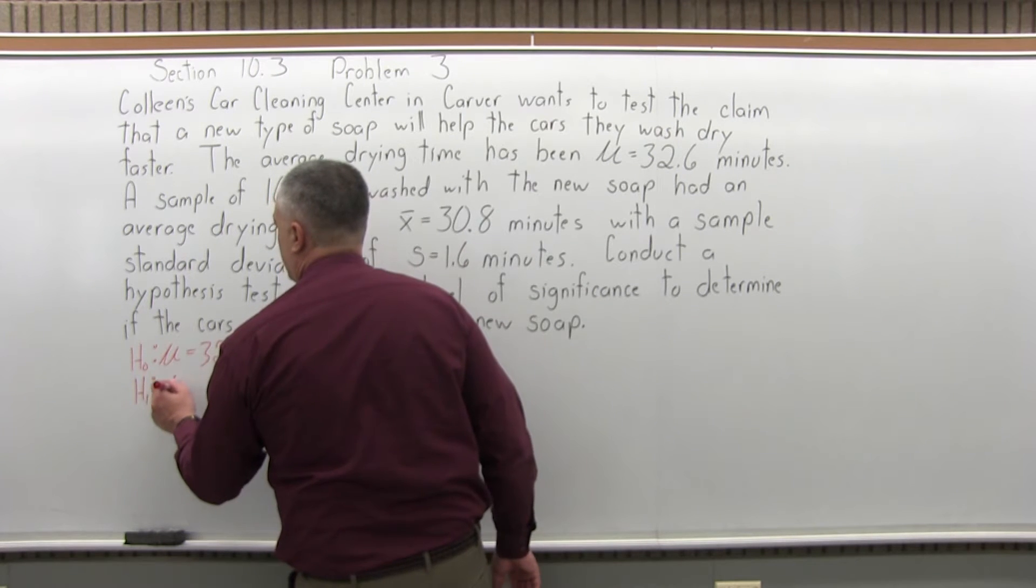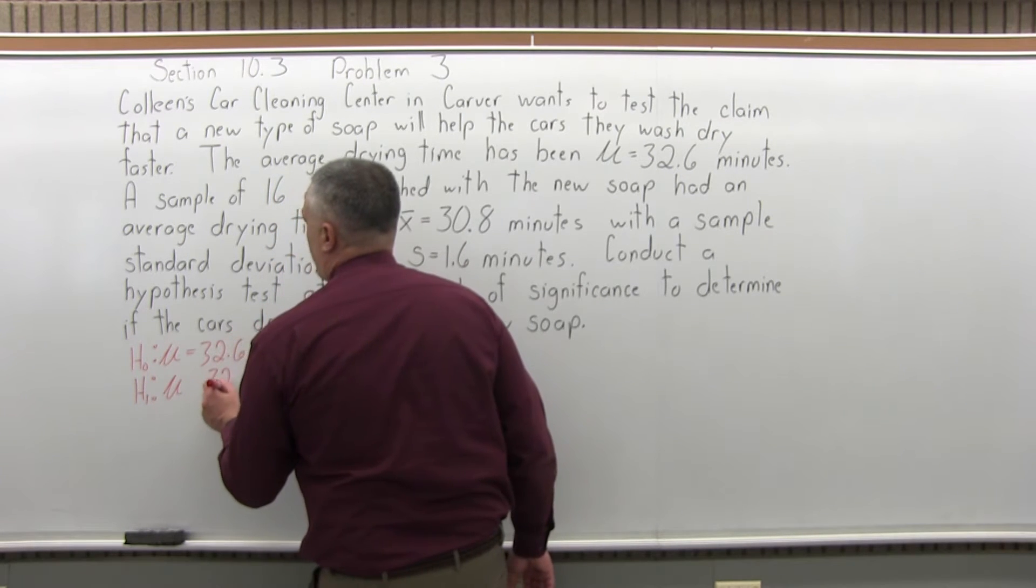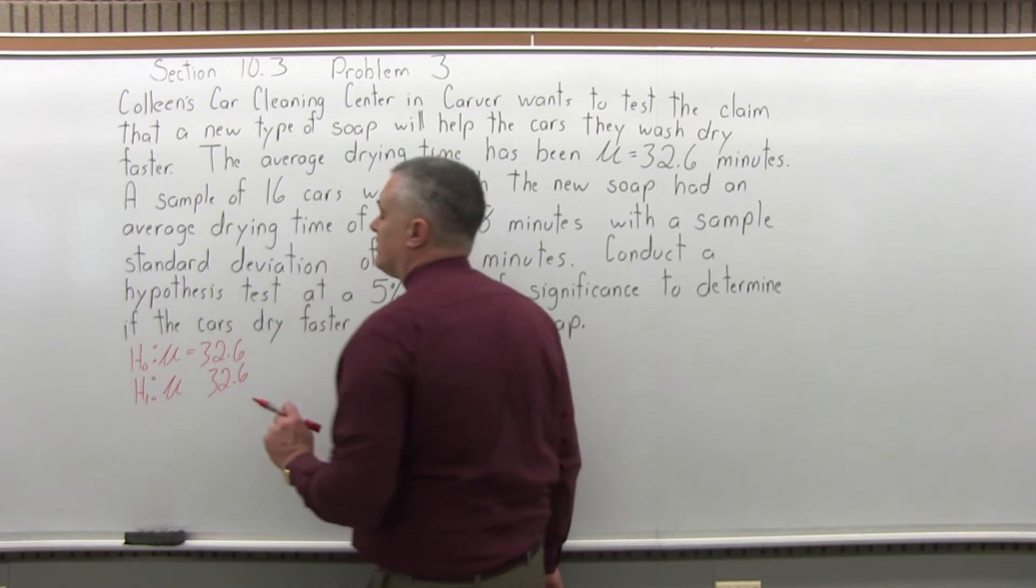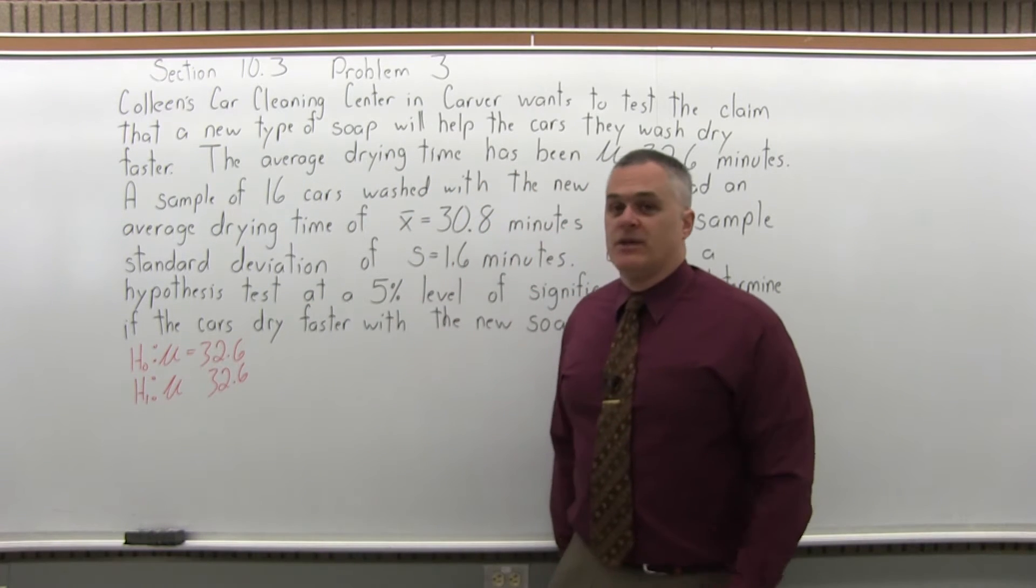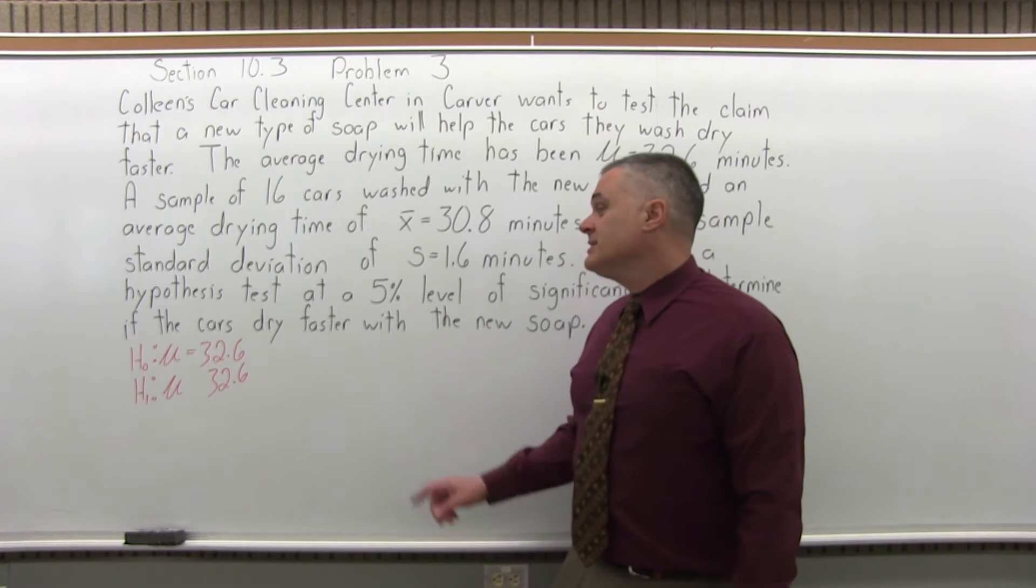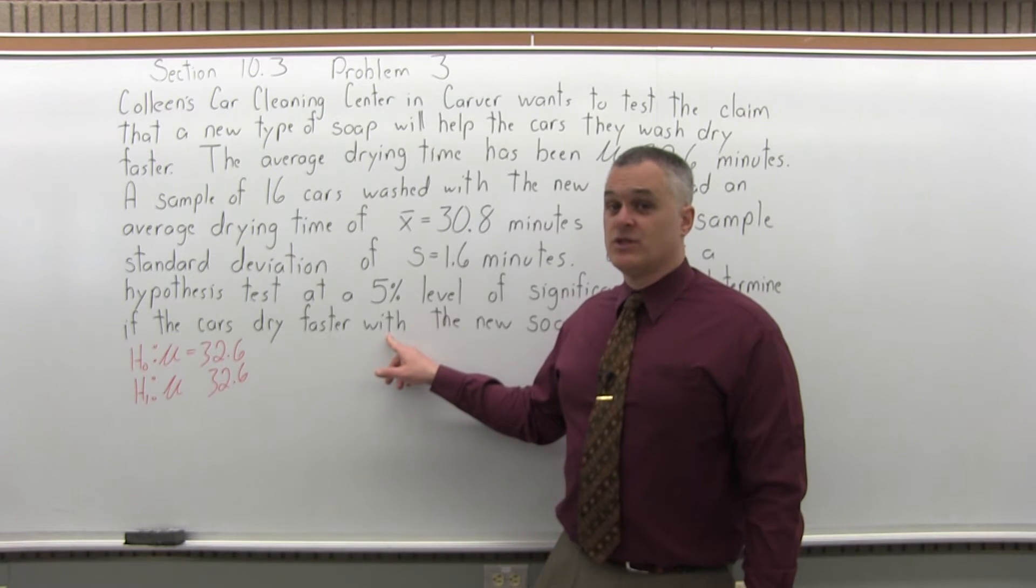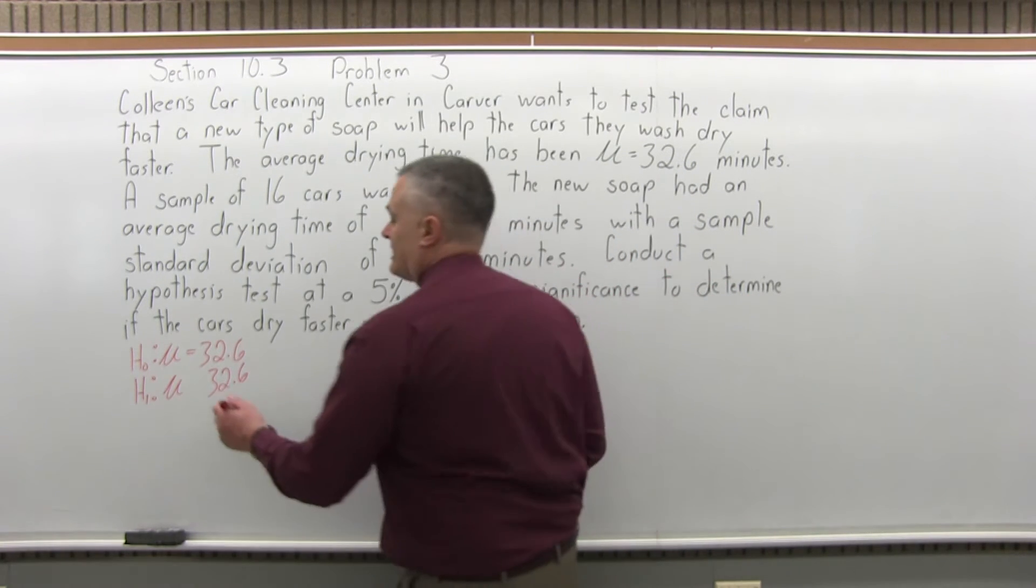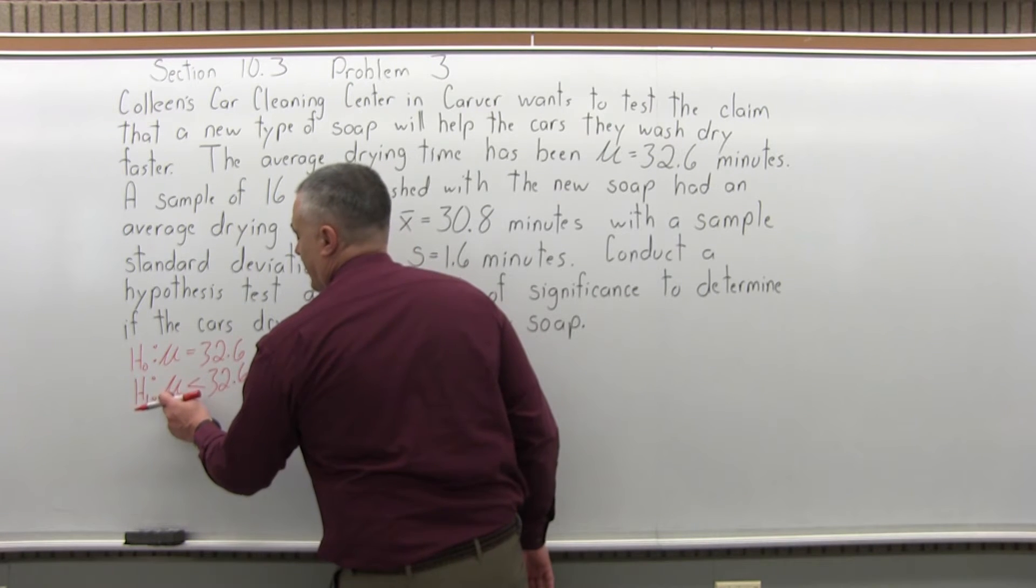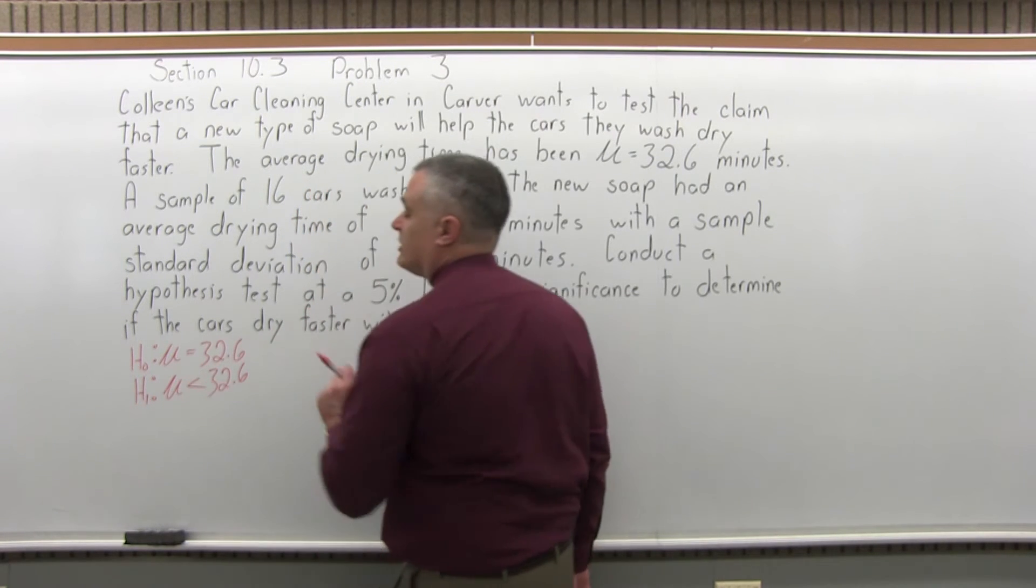and again you put the same mu, you put the same number, but there's going to be a different symbol between the mu and the number. Now in this case we want to see if the cars are drying faster so that the drying time is less. You want to test the claim that the average is now less than 32.6.